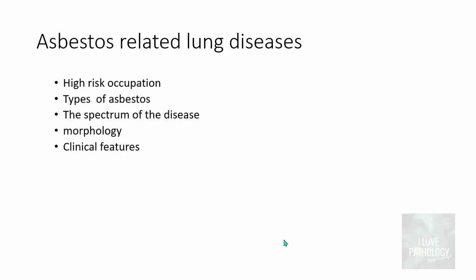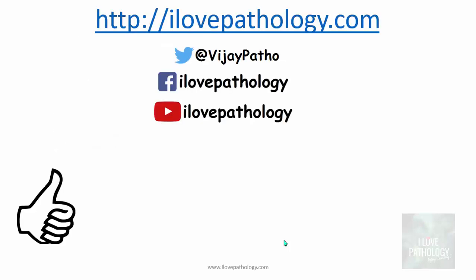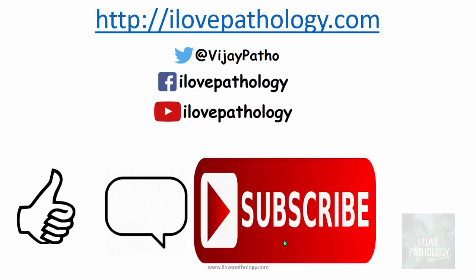In summary, we talked about occupations at risk, the types of asbestos — amphibole and serpentine forms, with amphibole forms being more dangerous — and the spectrum of diseases. In the lung: asbestosis and bronchogenic carcinoma. In the pleura: pleural plaques, pleural thickening, pleural effusion, and the most serious one, mesothelioma. Thank you for watching. Please hit the like button, comment if you have any queries, subscribe, and share if you find this video useful.